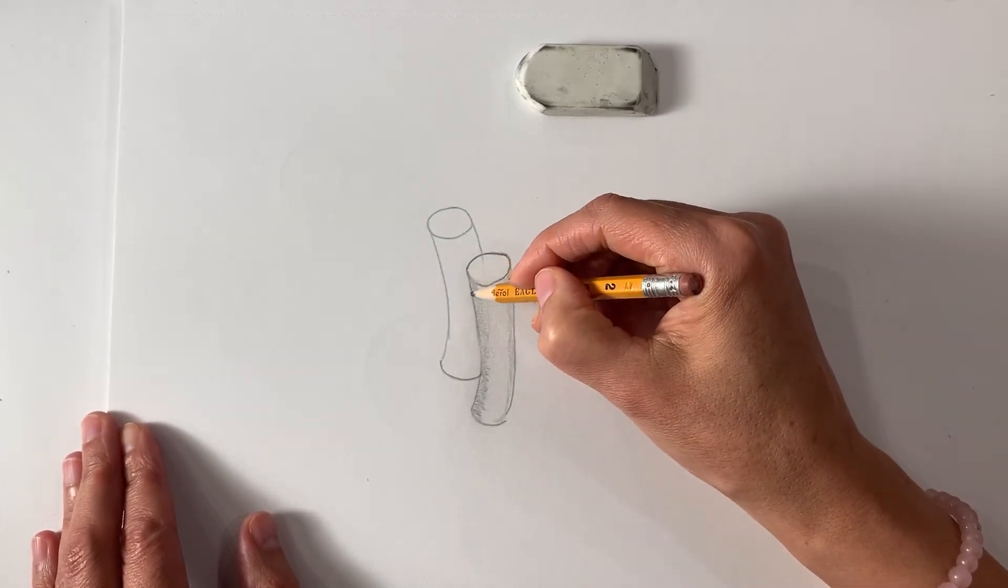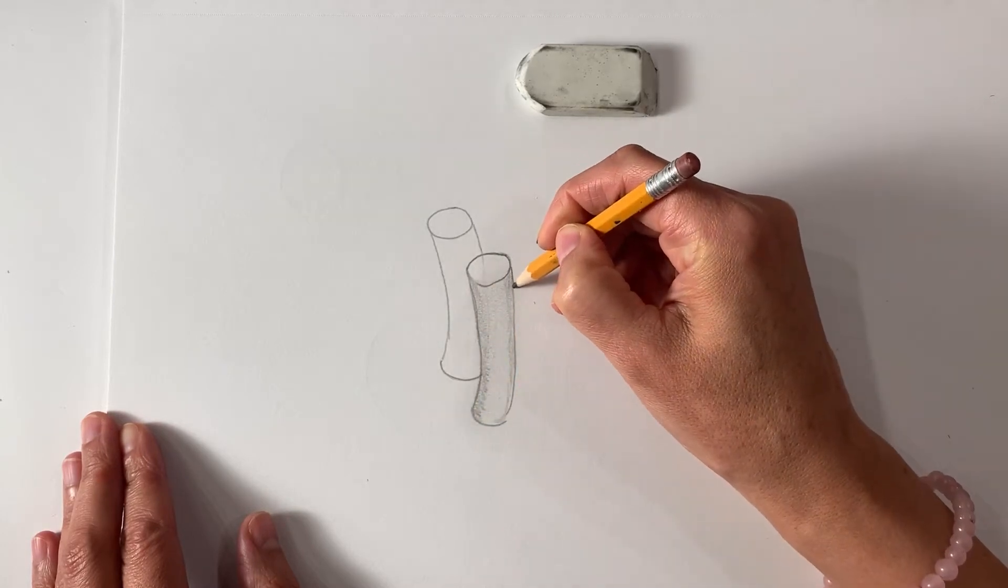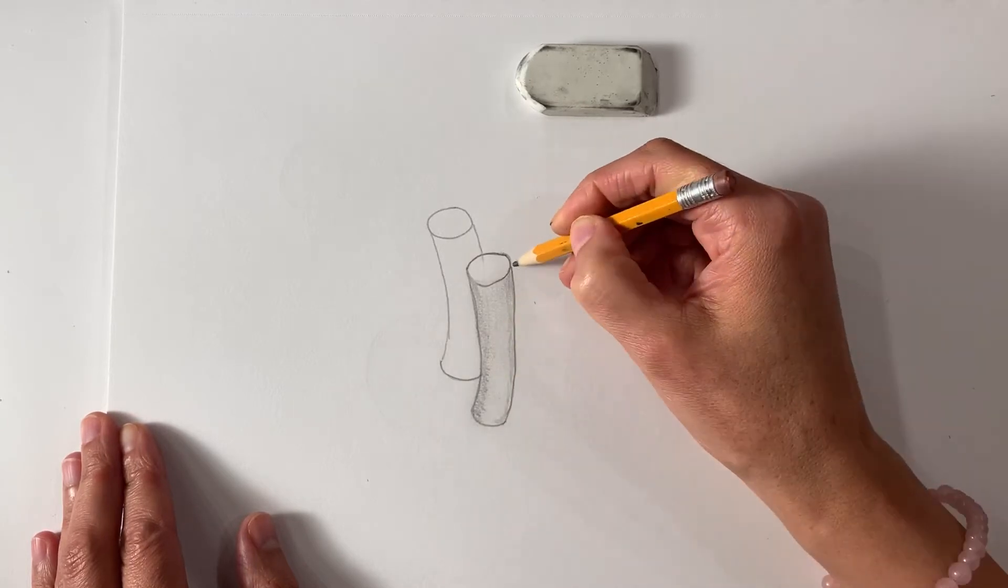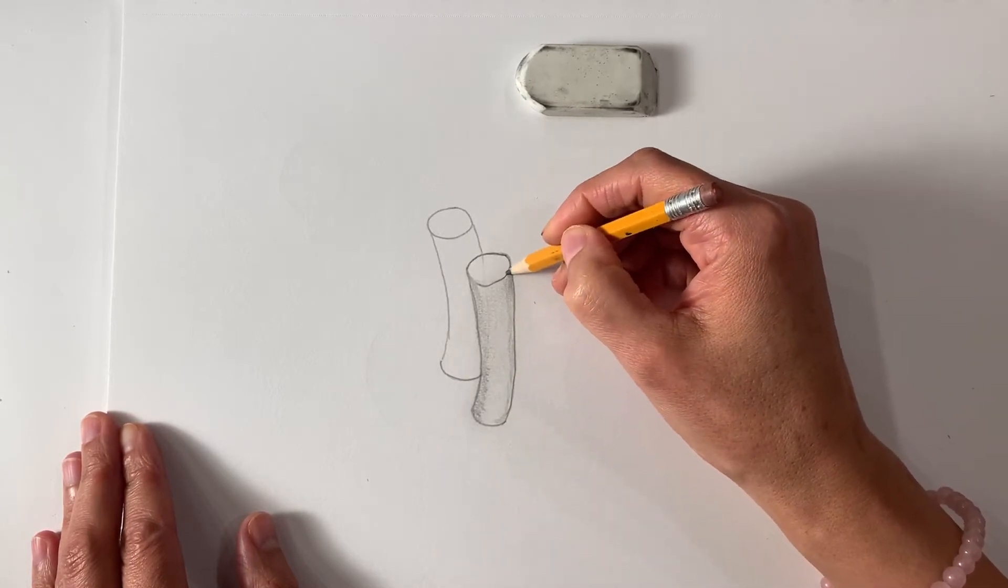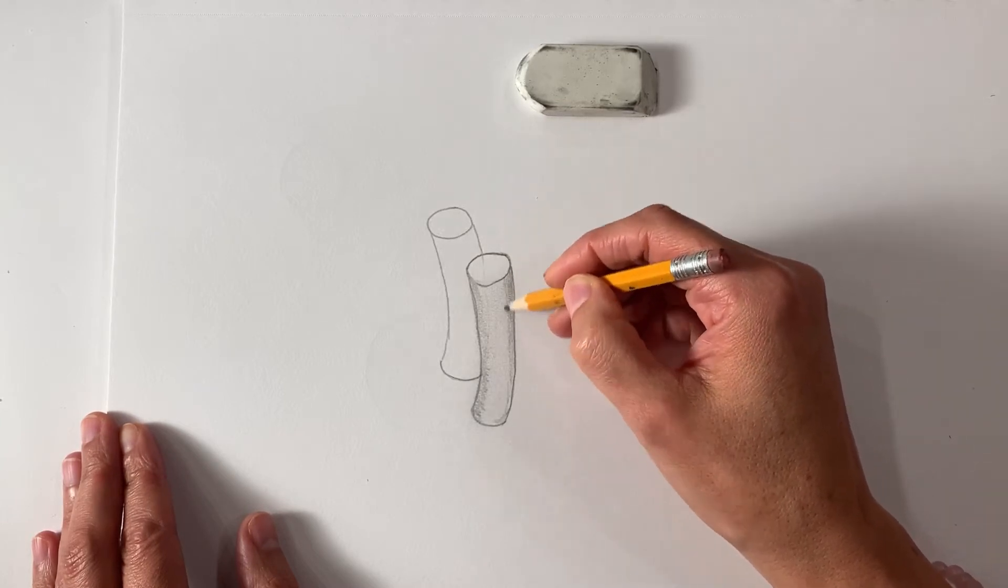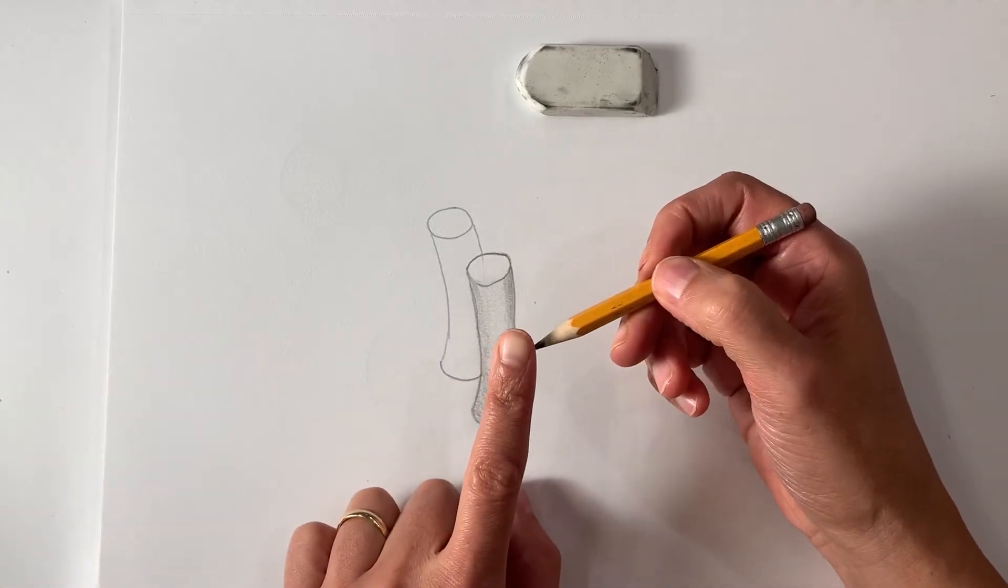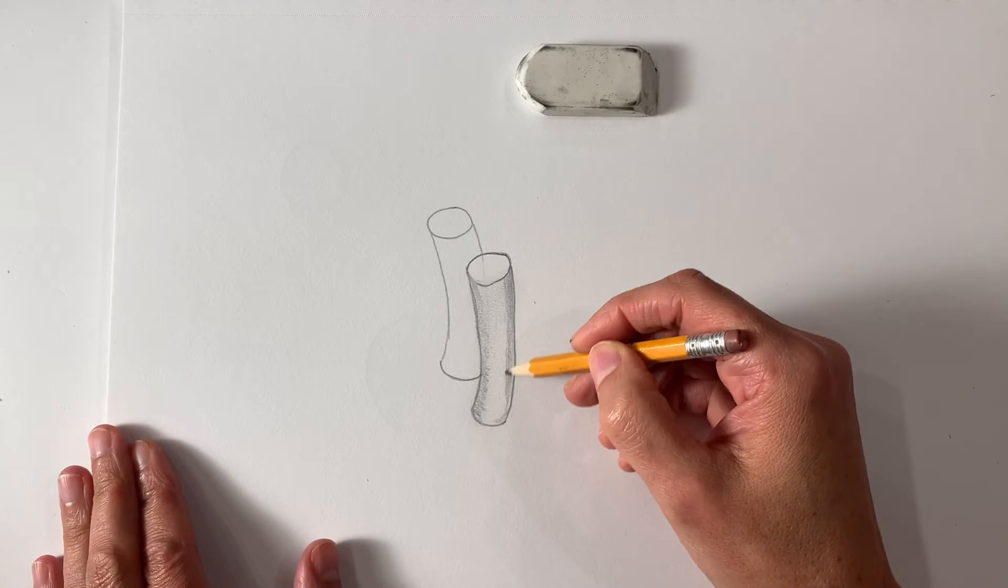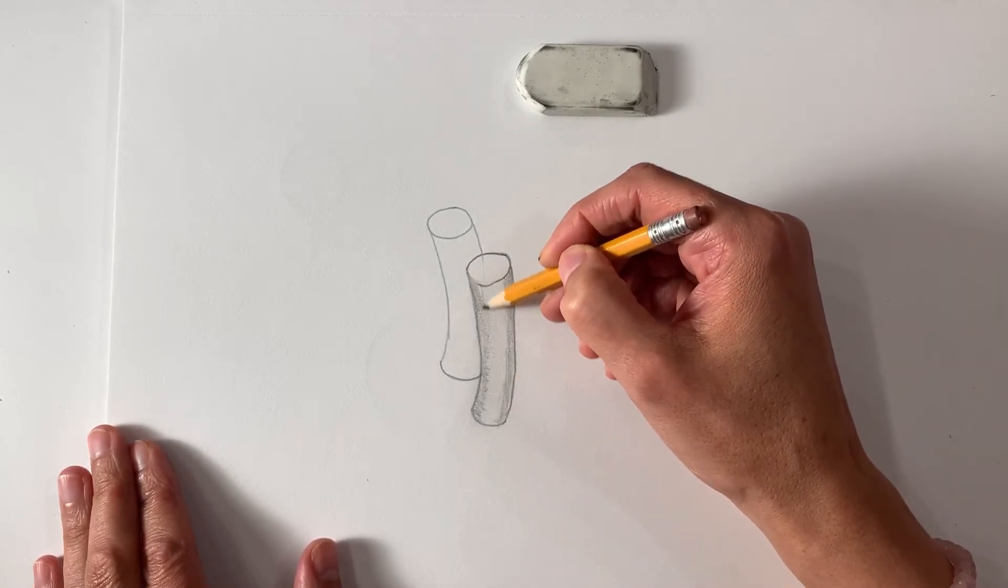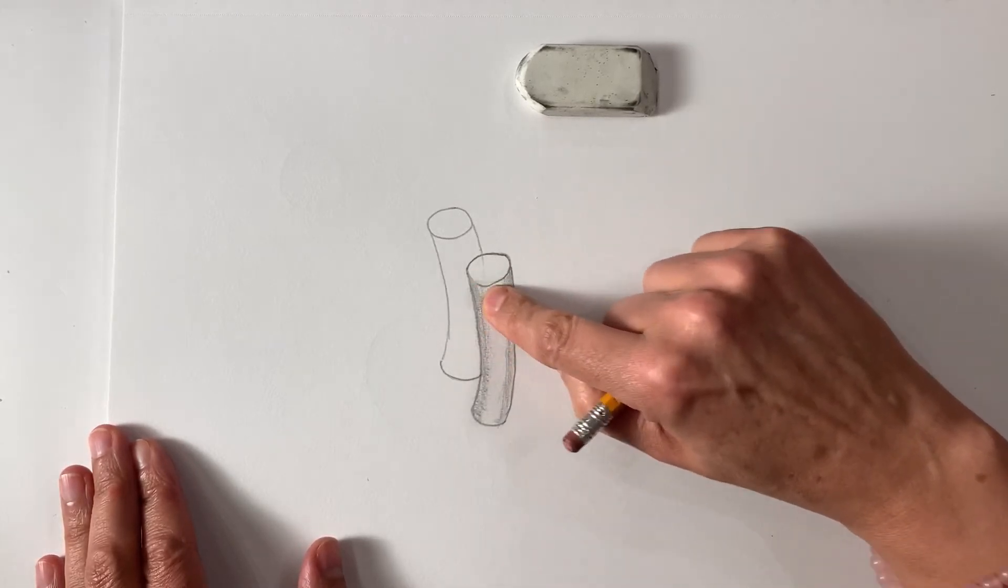A lot of people refer to a pencil as a lead pencil but actually there's no lead in the pencil. Lead is a poison so you would not put lead in a pencil. Pencils are made with graphite. This part is actually a graphite stone and that's a very oily stone and that's why it smudges so well.